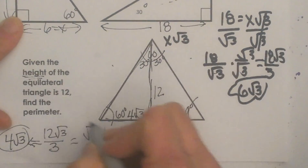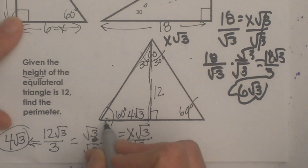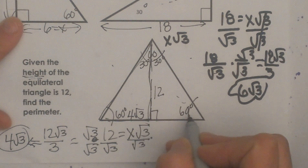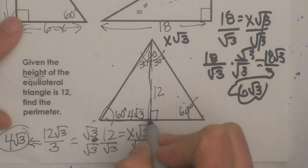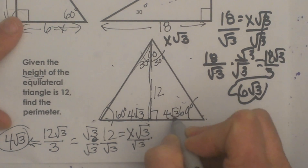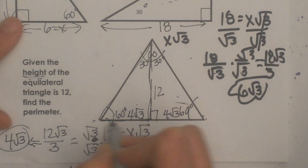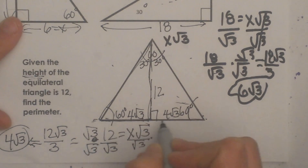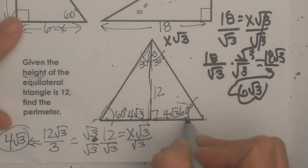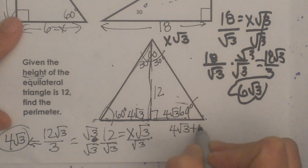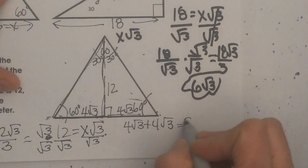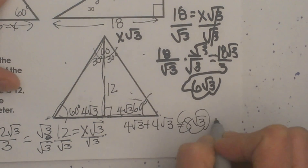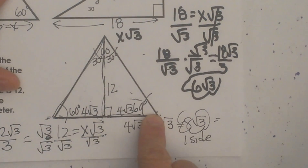Still looking at this 30-60-90, I know the two triangles are the same size. If this segment is 4 square root of 3, then the other half of the base is also 4 square root of 3. The whole length of the base is 4 square root of 3 plus another 4 square root of 3, which adds up to 8 square root of 3 — just like adding like terms. That is the length of one side of the equilateral triangle.